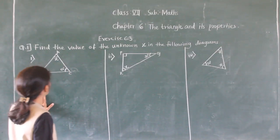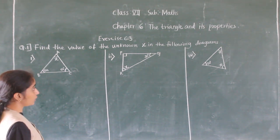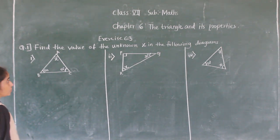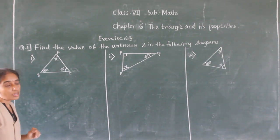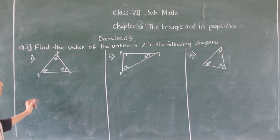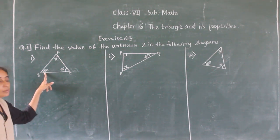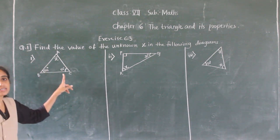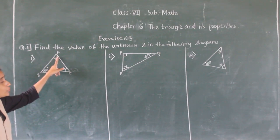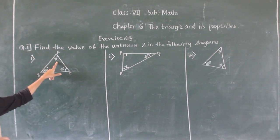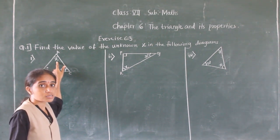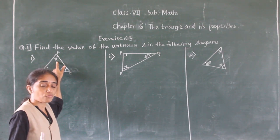Exercise 6.3, question number 1: find the value of the angle X in the following diagrams. In triangle ABC, angle B is 50 degrees, angle C is 60 degrees, and angle A is unknown — we have to find the value of X. We are going to solve this using the angle sum property of triangle.